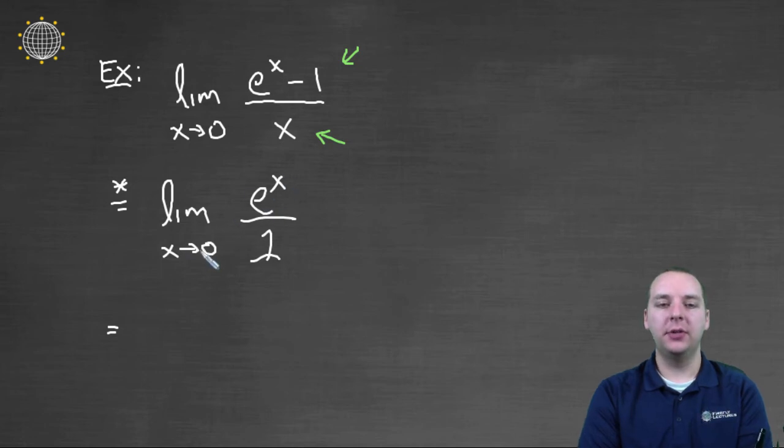If we substitute in zero, e^0 is 1, and 1/1 = 1. So we get our answer—it works out really well. This is the same as the limit of the original problem.